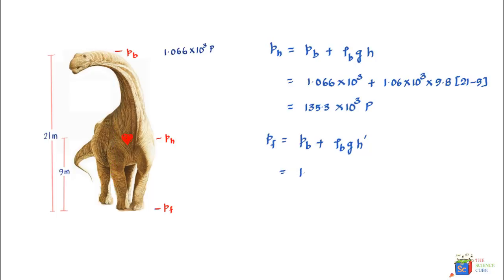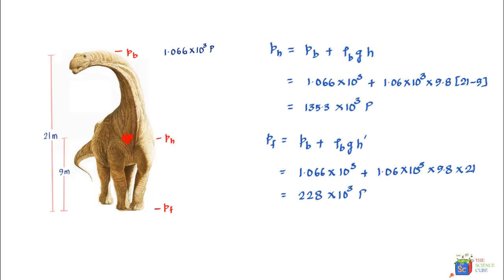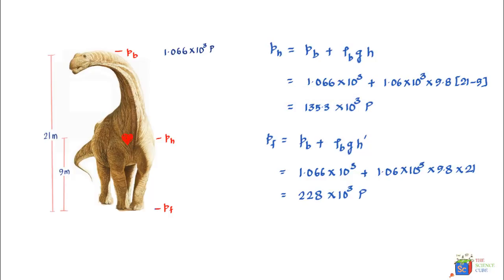We write the pressure at the brain level as 1.066 × 10³ pascals, plus the density of blood 1.06 × 10³ kg/m³ times g (9.8), times the height which is 21 meters. Solving this gives 228 × 10³ pascals. So when the heart produces a pressure of 135.3 × 10³ pascals, the pressure at the foot is 228 × 10³ pascals.